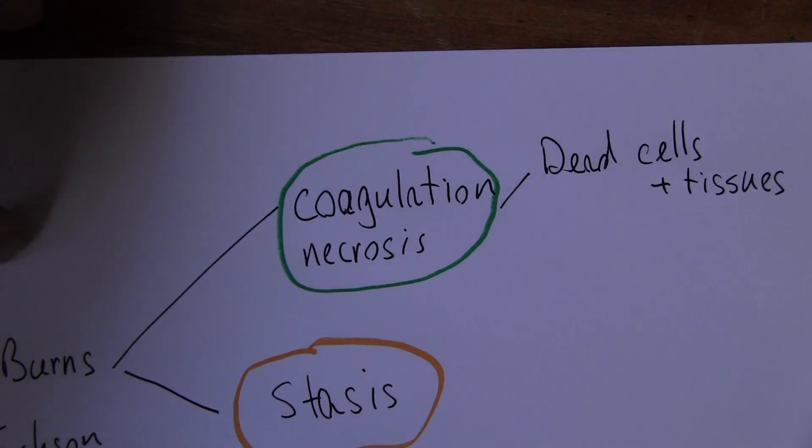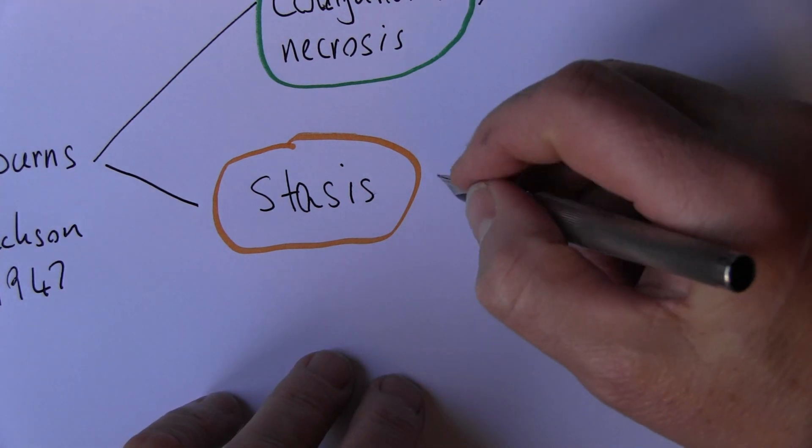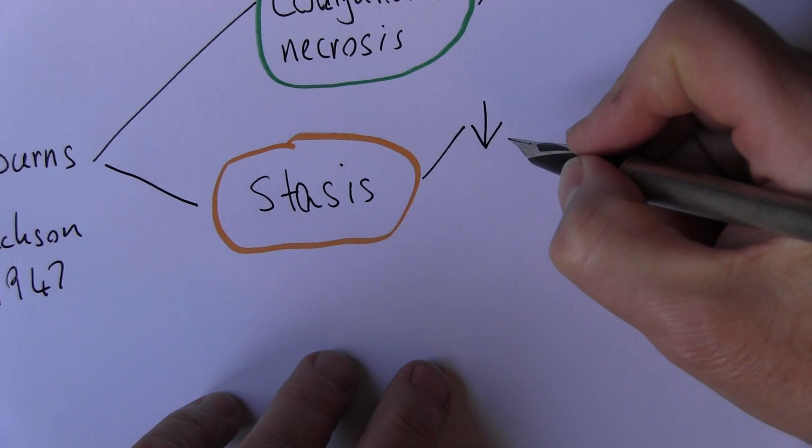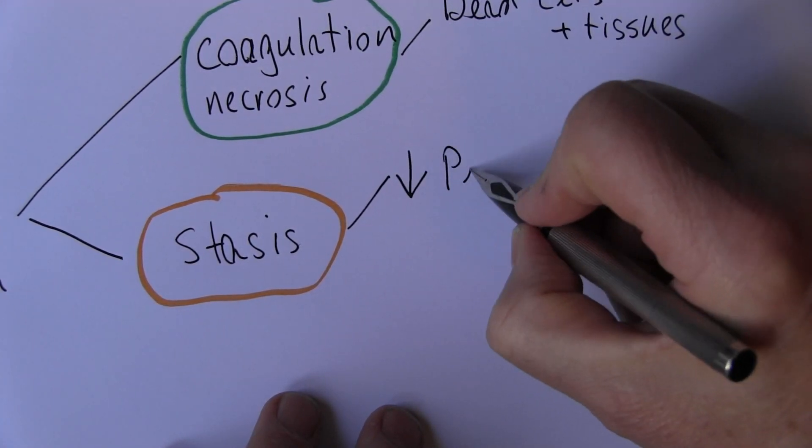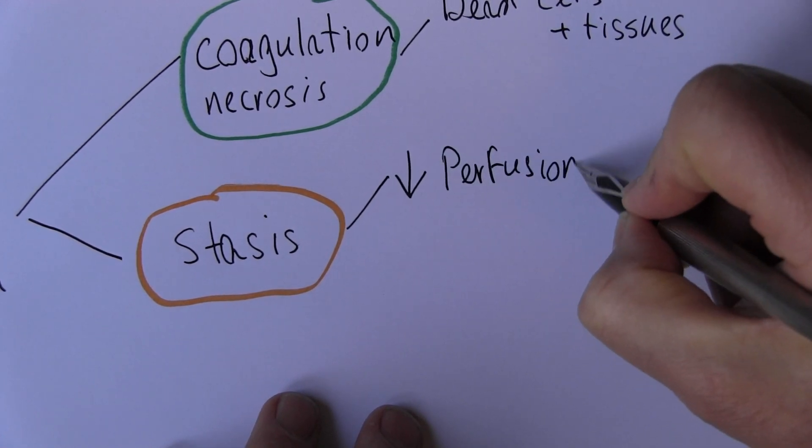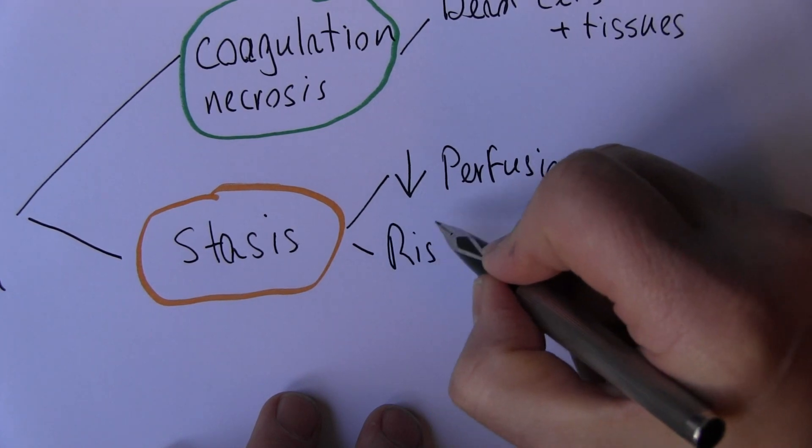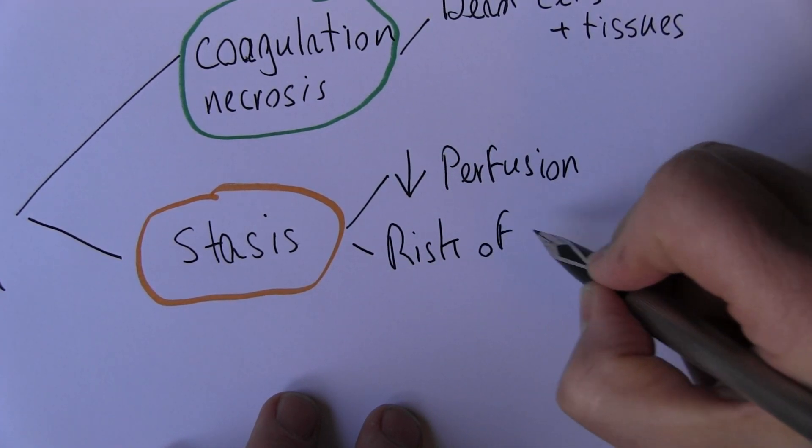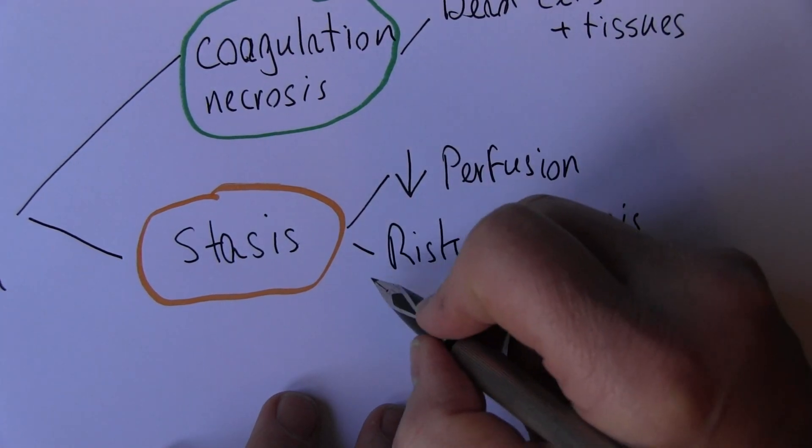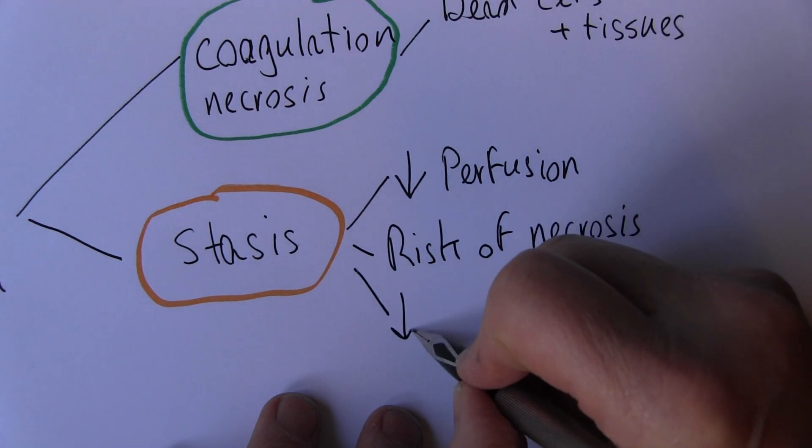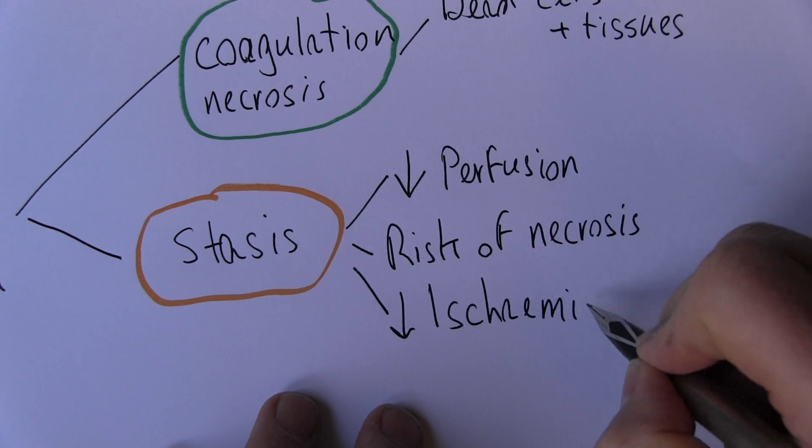Now this zone of stasis is kind of up for grabs, as it were, because this is an area of reduced perfusion, not no perfusion like this where everything's dead. There's reduced perfusion in this stasis zone, and that means there's a risk of necrosis. But if we can reverse the ischemia, if we can reduce the ischemia, then this tissue can remain viable.